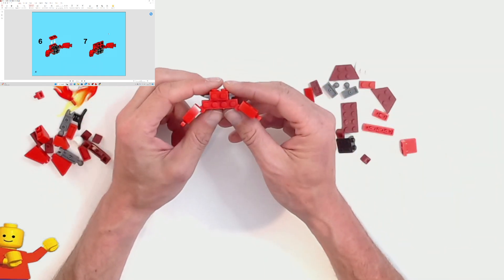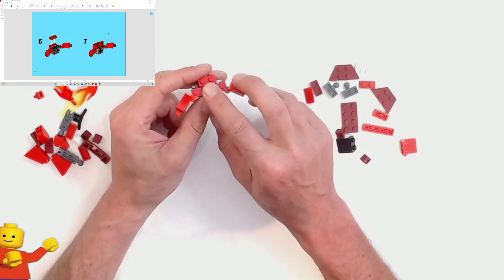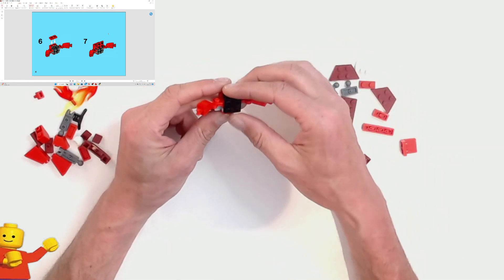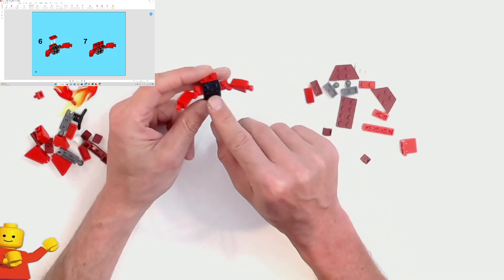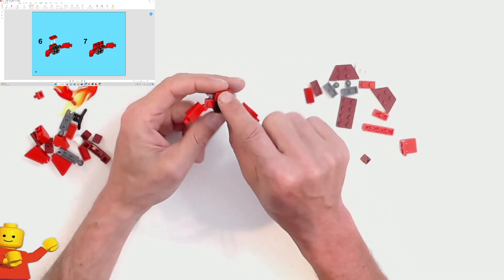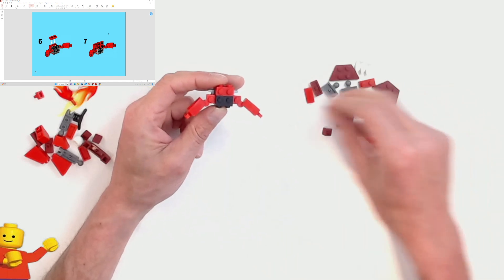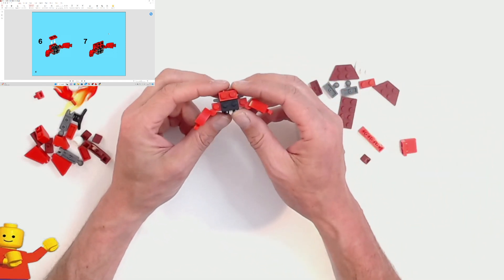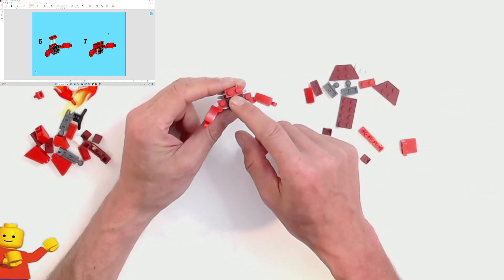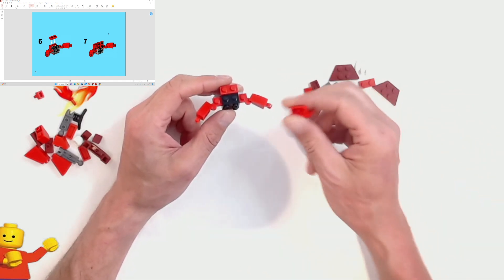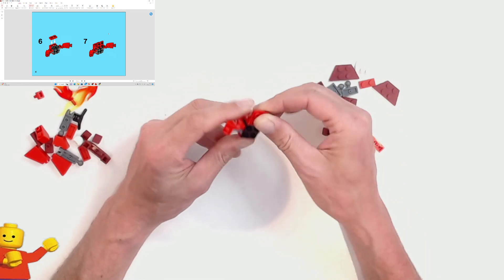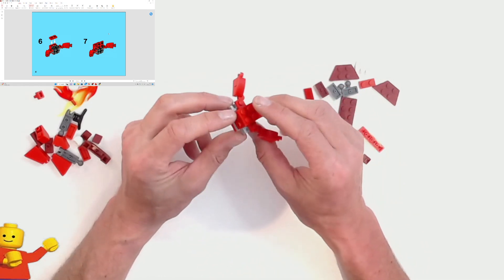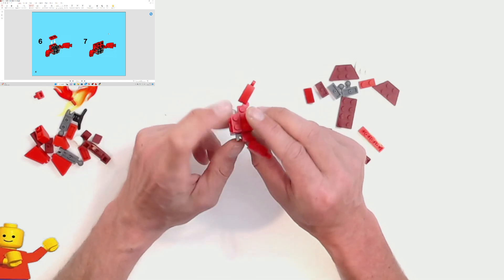And then we've got the one by two plate with the four studs going down the side. That's going to be on the front. So that's going to be his chest. And then we're going to put another one by two plate on the back here. Like so. And then we've got another one of these plates. But the other way around. So it's turned up with four studs. So now you've got eight studs going across the front. Like that. And it should be smooth on the inside.